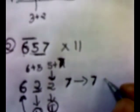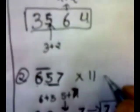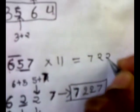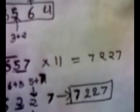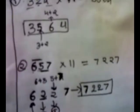So our final answer will be 6 plus 1, that is 7, 2, 2, 7. I hope you understand this solution.